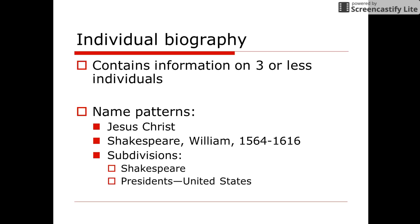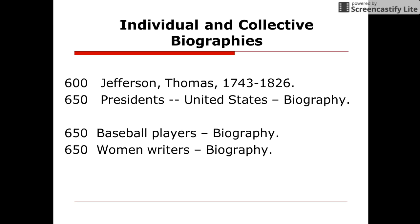Use of the subdivisions may not be necessary as the name alone is usually sufficient. The individual biography of Thomas Jefferson includes the dates associated with his life. There is a 600 subject added entry personal name for this book as well as the topical subject added entry 650 tag. Collective biographies use a collective term but may also include 600 tags for each person in the book, depending on how many are included.